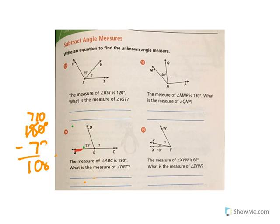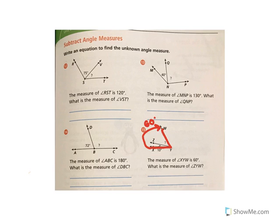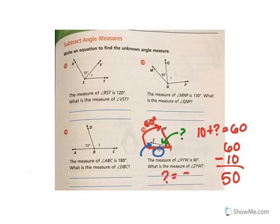Try this last one on your own. Remember, pause the video. When you're ready, turn it back on and we'll go over it. So, XYW from here to here was 60 degrees. I know that this little missing part right here is 10 degrees. I want to know what this part is right here. So it would be 10 plus the question mark equals 60. So to find out the missing part, I take 60 and I subtract 10. That would give me 50. So the missing degree is 50 degrees, just like that.